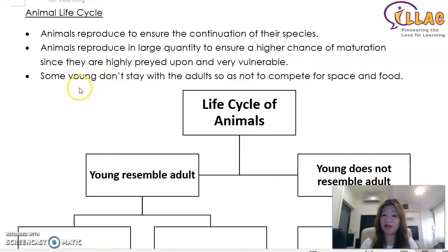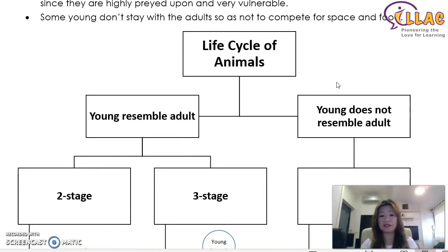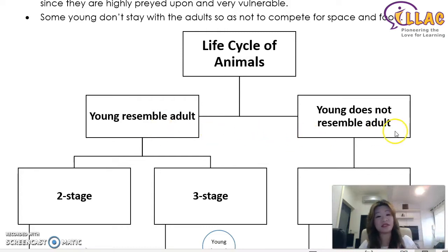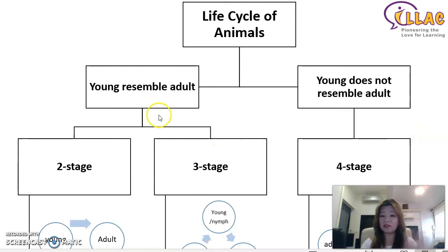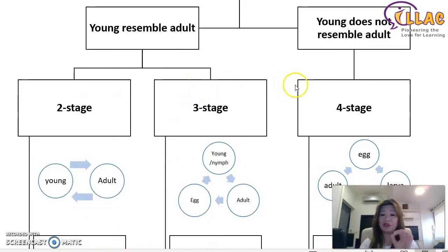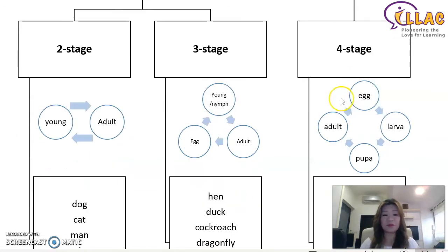Another keyword to memorize: some young don't stay with their adults so as not to compete for space and food. You also need to understand that there are two types of life cycles in animals. One, whereby the young resembles the adult — they only look a little bit smaller and less mature. The other is when the young does not resemble the adult. The young that resemble adults are usually two-stage and three-stage animals. Those that do not resemble the adult are four-stage or more animals. Here we are only looking at two, three, and four stages.